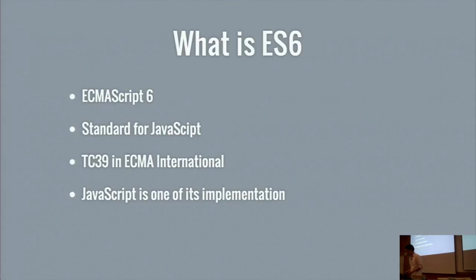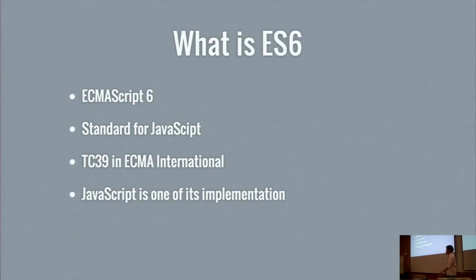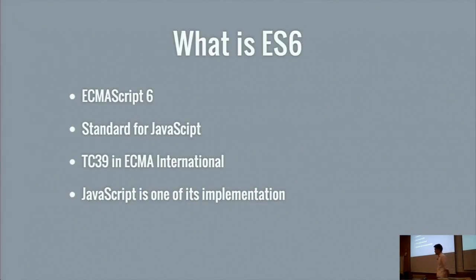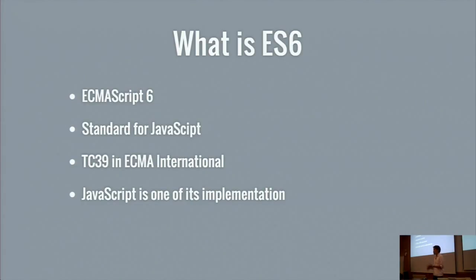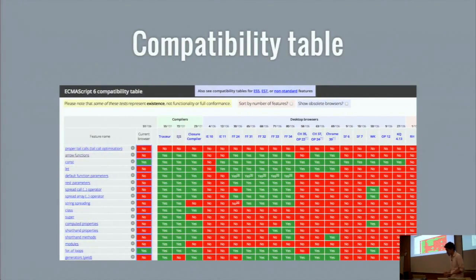Historically, JavaScript was invented at Mozilla. Then Internet Explorer implemented it, but called it JScript — different from JavaScript because of trademark issues. So we needed a standard. ECMA International started to standardize JavaScript. ECMAScript is the specification, and JavaScript is one of the implementations. Another implementation is ActionScript 3.0, which was based on ECMAScript 4 — which was already rejected. So you could say ActionScript 3.0 is already obsolete.